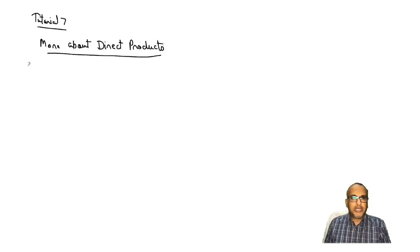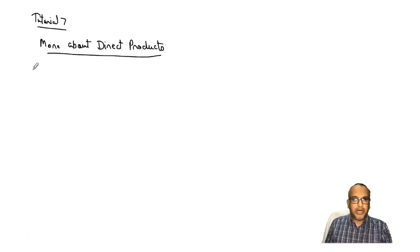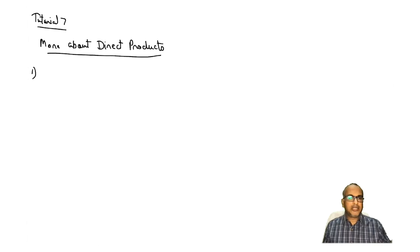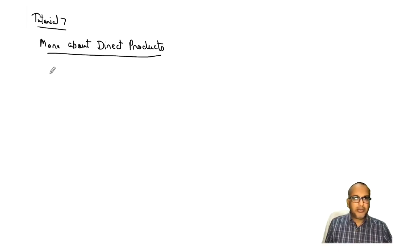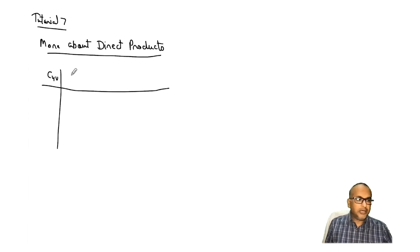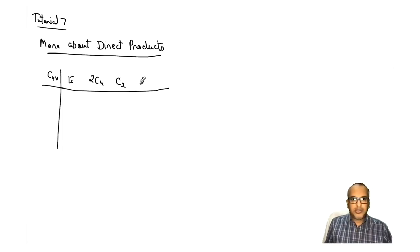By now we all know what direct products are in case of matrices or in case of traces of matrices — how we obtain the direct product. Let us directly go and discuss the results. When discussing these results, let us take an example of the C4V point group, which has all sorts of 1D and 2D irreducible representations. Let me write down the character table: E, 2C4, C2, 2SigmaV, and 2SigmaD.